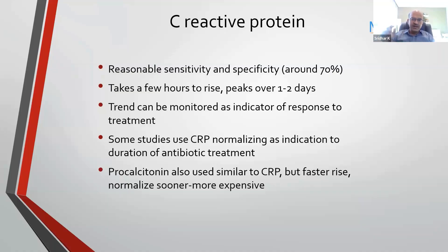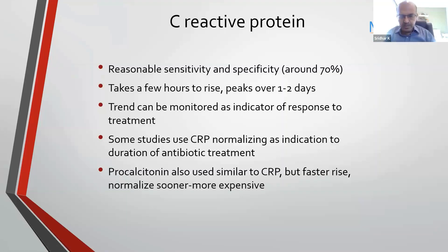The CRP trend can be monitored as an indicator of response to treatment, but not as an indication to escalate treatment. Escalation should be based on culture results if it comes as a resistant bug, or if the clinical response is poor — if the baby is worsening hemodynamically. Some studies use CRP normalizing to decide duration of antibiotic treatment, but most of us follow time-based treatment. If the CRP is normal, you can stop a day or so earlier.